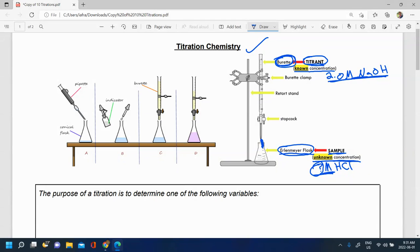So this is the setup. You put your substance of unknown concentration in the flask, you put your substance of known concentration in the burette. The substance of known concentration is called the titrant. Another word for the substance of unknown concentration, we sometimes call it the titrand.